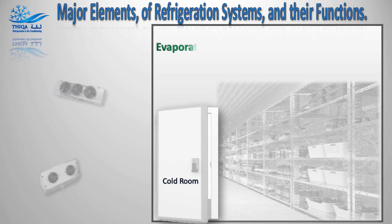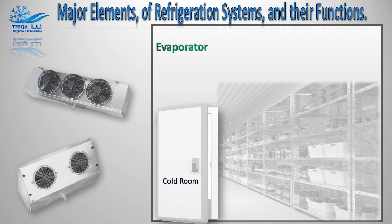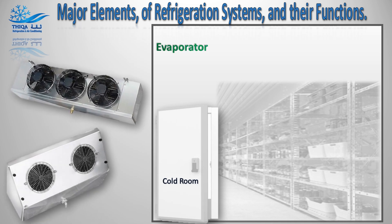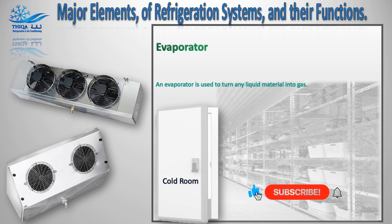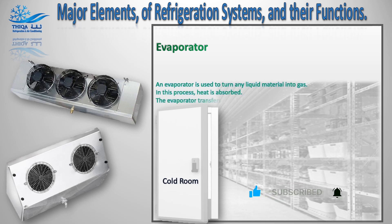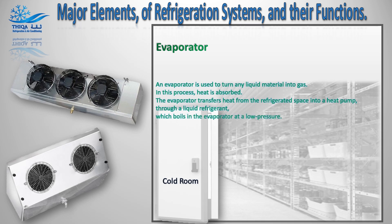Number 4, the evaporator. An evaporator is used to turn any liquid material into gas. In this process, heat is absorbed. The evaporator transfers heat from the refrigerated space into a heat pump, through a liquid refrigerant, which boils in the evaporator at low pressure.